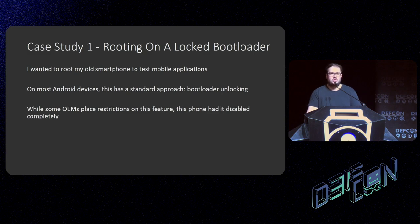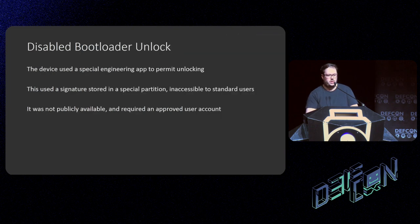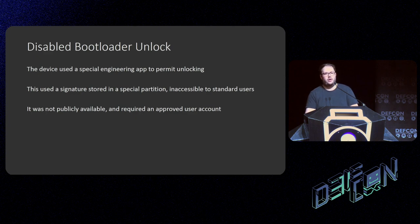OEMs very rarely do this — they usually just add restrictions requiring you to sign up with their services. The target device was a smartphone from a Chinese OEM released in 2019 that used an OEM-developed fork of Android with its own security features. While it didn't have traditional bootloader unlocking, it did have a special engineering app that permitted bootloader unlocking using a signature stored in a partition on the device. This was inaccessible to standard users and not publicly available — it required an approved user account, a long-winded process I didn't want to go through.